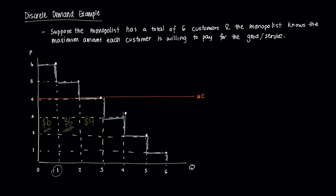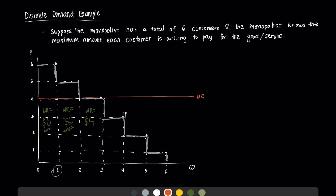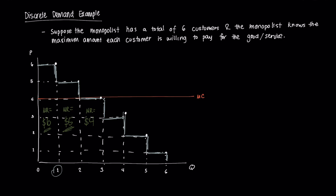Consequently, the monopolist's marginal revenue for each unit equals the price of that unit — six dollars for the first, five dollars for the second, four dollars for the third. This firm's marginal revenue curve is effectively the demand curve. With a marginal cost curve equal to four dollars, the monopolist is willing to sell up to the third unit, since their respective MRs are greater than or equal to marginal cost. Like any profit-maximizing firm, a perfectly price-discriminating monopolist produces until MR equals MC.